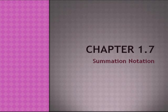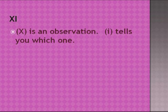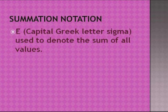Chapter 1.7: Summation Notation. A sum is the total of all values together. Xi — capital X, subscript i — where X is an observation and i tells you which one. The Greek letter sigma is used to denote the sum of all values.